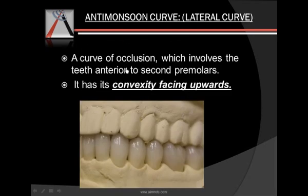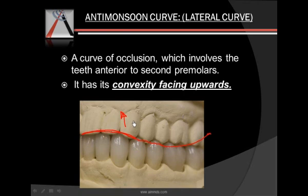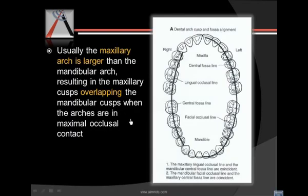Then we have the anti-Monson curve. This is a curve of occlusion that involves the teeth anterior to the premolars. While posterior teeth form the curve of Spee, the anterior teeth form a curve which has a convexity facing upwards, and this curve is called the anti-Monson curve.